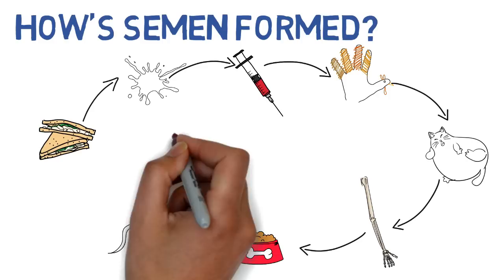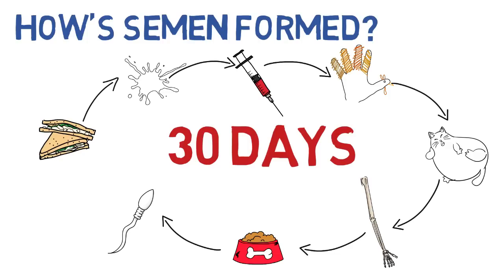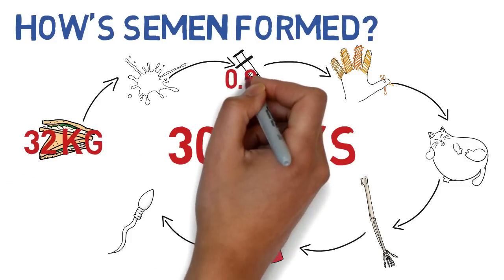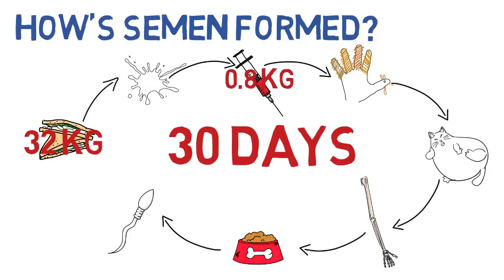It takes approximately 30 days and 4 hours to complete this cycle. Scientists believe that an intake of 32 kilograms of food produces 800 grams of blood, which in turn forms only 20 grams of semen. This will be discharged in one ejaculation. Now you can see how precious the semen is.